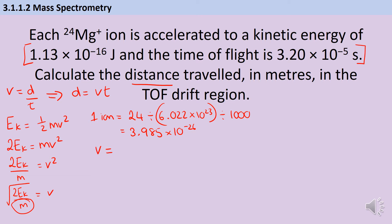I double the kinetic energy from the question, divide it by the mass I've just calculated, and square root the whole thing, coming out with an answer of 75,304 metres per second. I'm going to write down all of those values for now because I want to round as late as possible. Now that I have this information, I can put it into the second equation: d = vt.